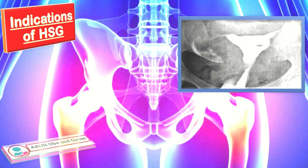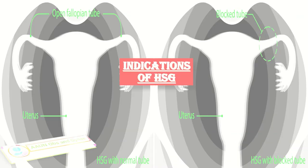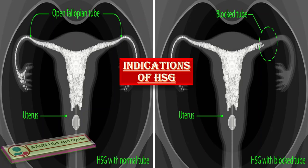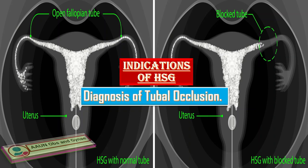Another indication of HSG is PID. If PID infects the fallopian tube, it can scar the lining of the tubes, making it more difficult for the dye to pass through. So on HSG in PID, filling defects can be seen.